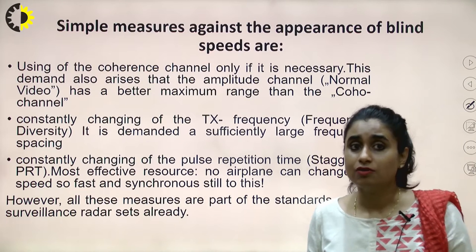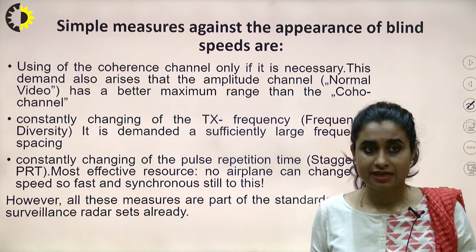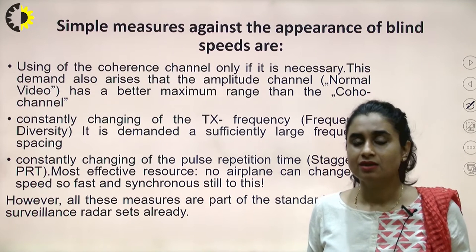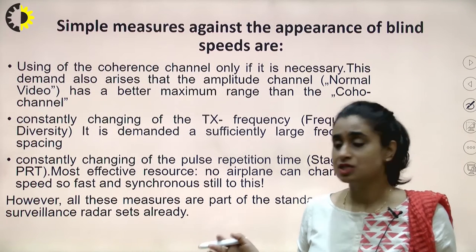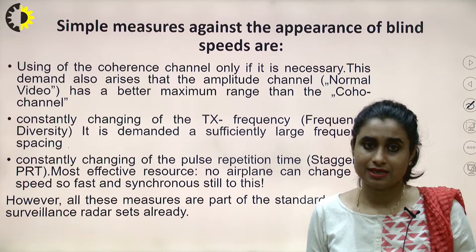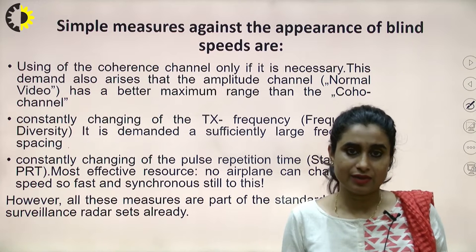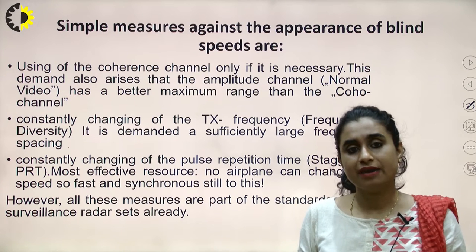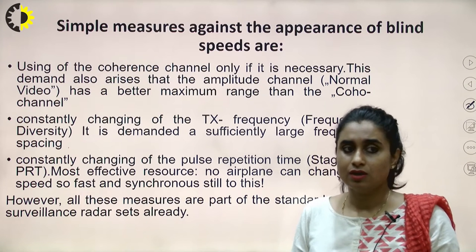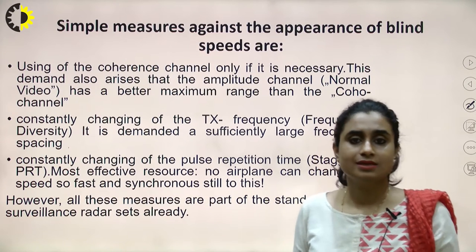There are various ways of removing or decreasing blind speed. These include using a coherence channel only if necessary — it has a better maximum range. Another way is constantly changing the frequency diversity, although it requires a large frequency spacing and bandwidth. Another way is to constantly change the pulse repetition frequency, and if we change that pulse repetition frequency at every pulse, that will be the best scenario. Changing the pulse repetition frequency after every pulse is called staggered pulse repetition frequency — staggered PRT, that is pulse repetition time. Every pulse will be transmitted with some different frequency.